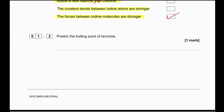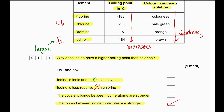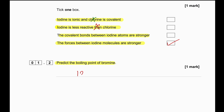Predict the boiling point of bromine. The boiling point of bromine will be lower than -35°C and higher than -188°C, so somewhere in between. From -188 to -35, there is an increase of 150 degrees Celsius. If we increase it by 150 degrees Celsius from -35, we can say the boiling point is approximately -120 degrees Celsius.